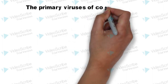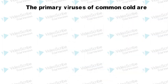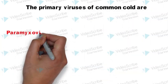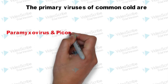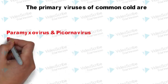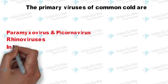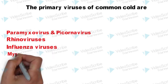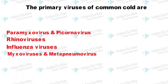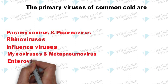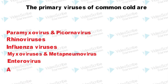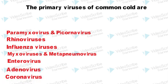The primary viruses of common cold are paramyxovirus and picornavirus, rhinoviruses, influenza viruses, myxoviruses and metapneumovirus, enterovirus, adenovirus, and coronavirus.